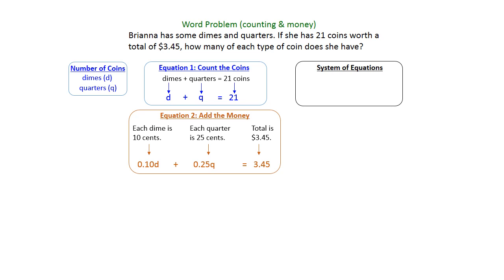Then what we're going to do is we've got our system. D plus Q equals 21, and 0.10D plus 0.25Q equals $3.45. Whenever you have decimals in your system, it's an easy fix to just multiply by 100. When you do that, you get to move the decimal to the right two places in each place. Make sure you do that all three places.